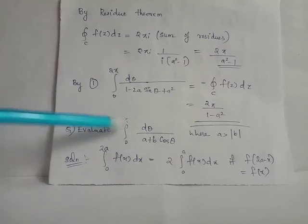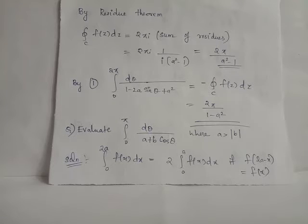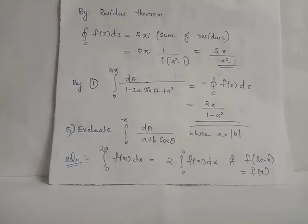Evaluate the integral from 0 to π of dθ/(a + b·cosθ), where a > |b|. We wish to transform this given integral to the type ∫₀^{2π} f(cosθ, sinθ) dθ, where f(cosθ, sinθ) is a rational function in sinθ and cosθ.